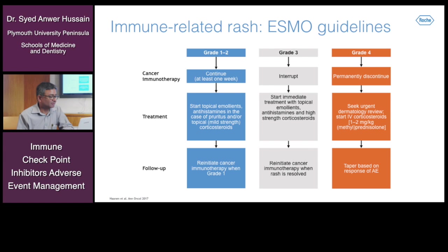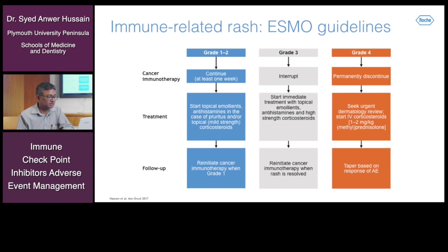Reinitiate cancer immunotherapy when toxicity is at grade 1. For grade 3 rash, interrupt treatment immediately and start topical emollients, antihistamines, and high-strength corticosteroids; reinitiate cancer immunotherapy when the rash has resolved. For grade 4 toxicity, permanently discontinue the immune checkpoint inhibitor, seek urgent dermatology input, and start intravenous corticosteroids at 1 to 2 milligrams per kilogram methylprednisolone, then taper based on response. Identifying and managing toxicity appropriately is key to improved outcomes with these drugs.